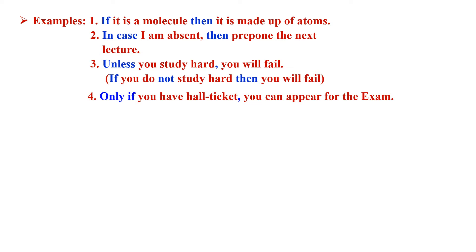Third example: 'Unless you study hard, you will fail.' Here, 'unless' and comma are the connectives. We have to transform the sentence into 'if...then' form. Since 'unless' means 'if not,' we write it as: 'If you do not study hard, then you will fail.' The connective is 'if...then,' but 'not' is present in the antecedent. So the antecedent is 'you do not study hard' and the consequent is 'you will fail.'